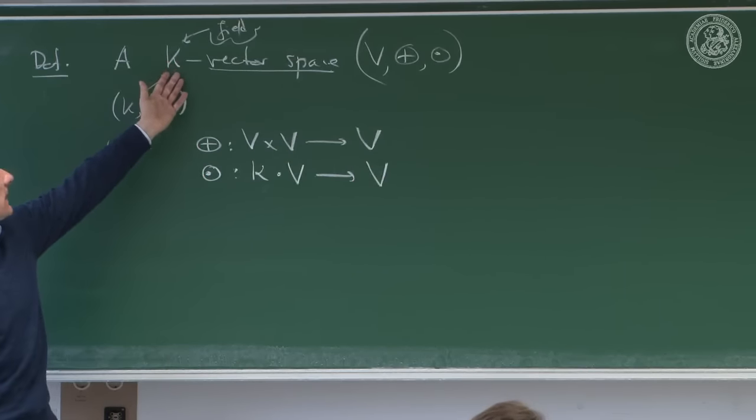Now, given a vector space V, you can define a subset U of V to be a vector subspace if, for all u₁, u₂ in U, their sum is again in U, and for all λ in K, λu₁ is again in U. One also says a subset is a vector subspace if the addition and scalar multiplication close on U — you take two elements from U and they don't lead you outside.